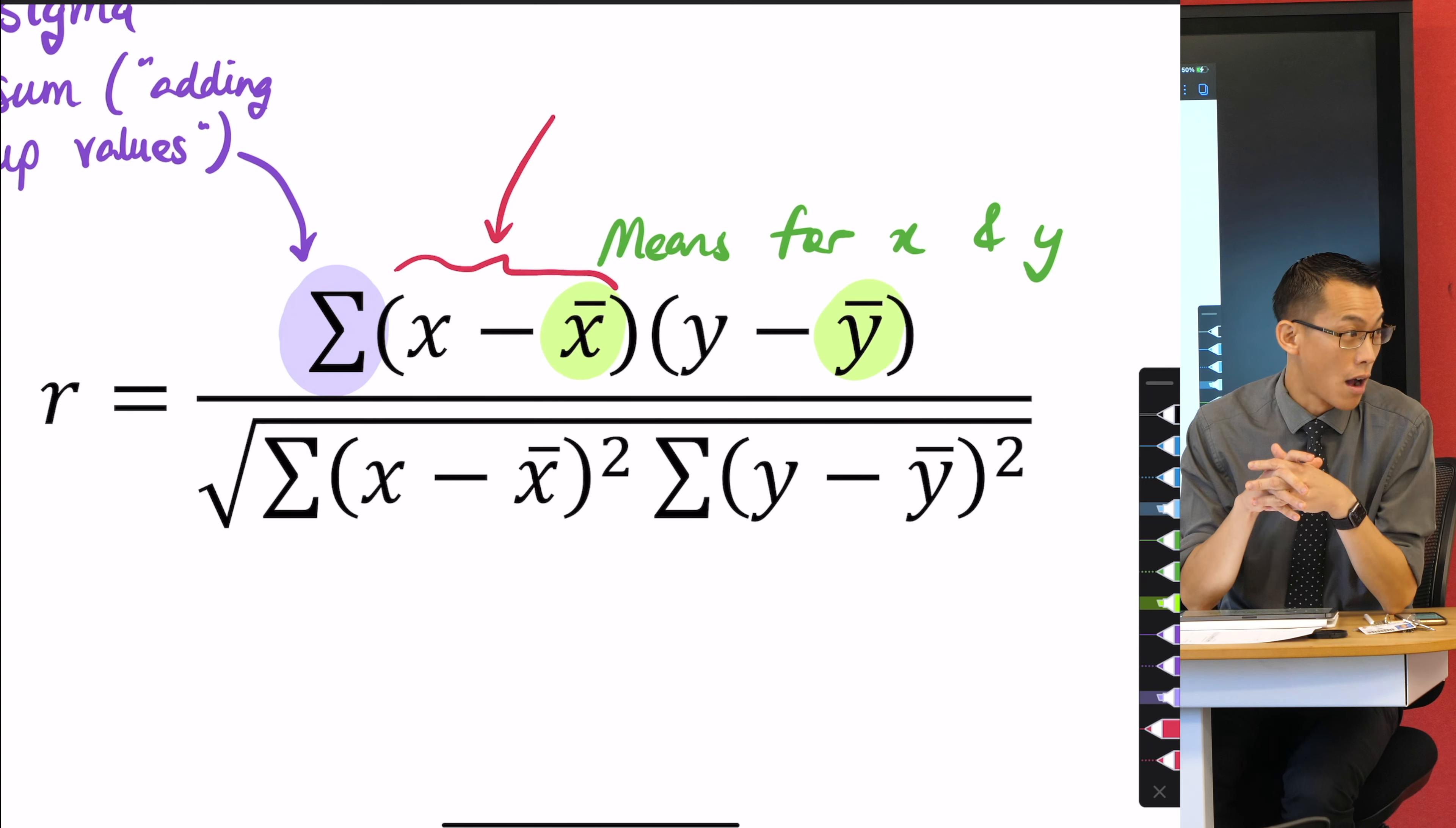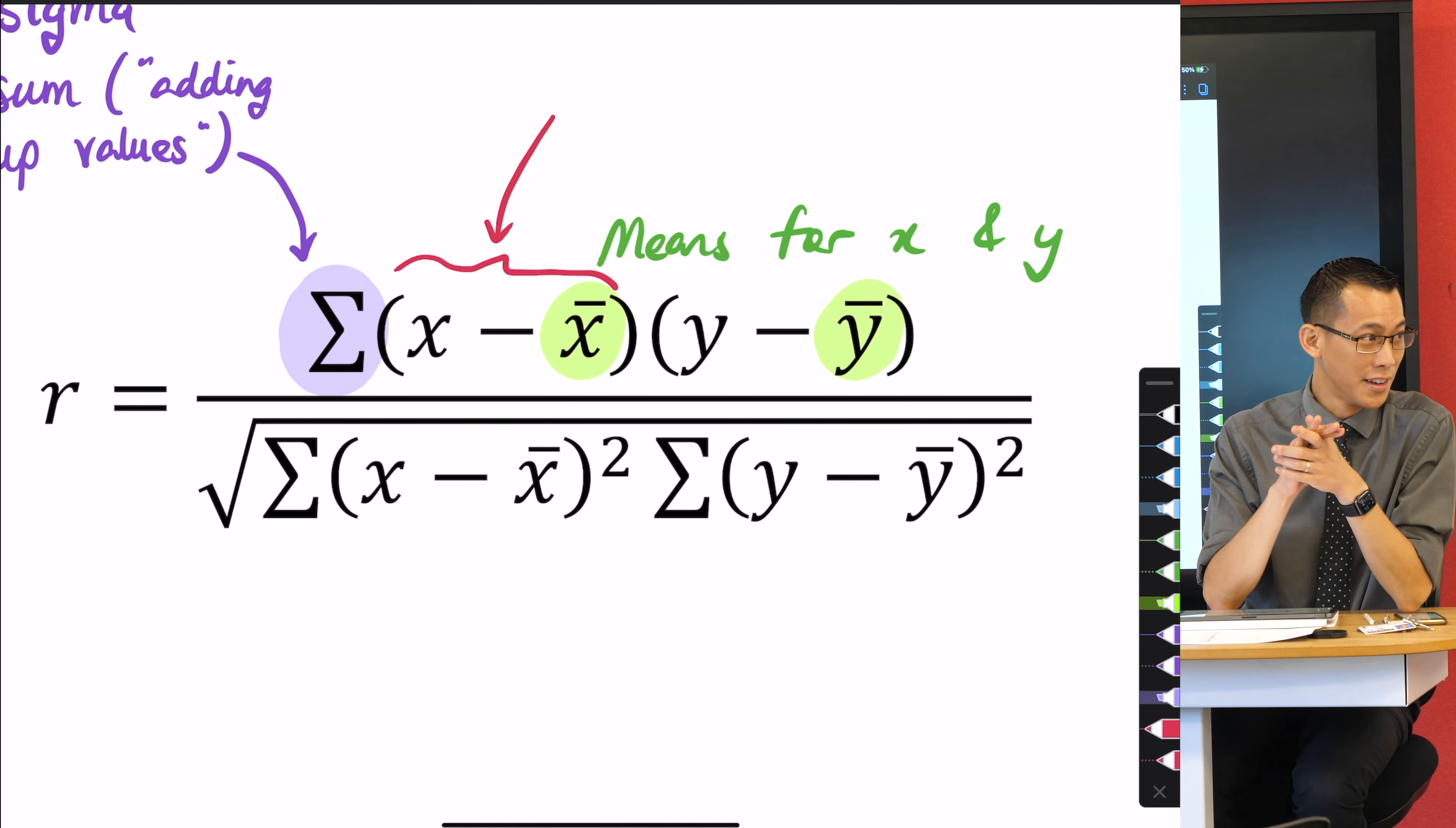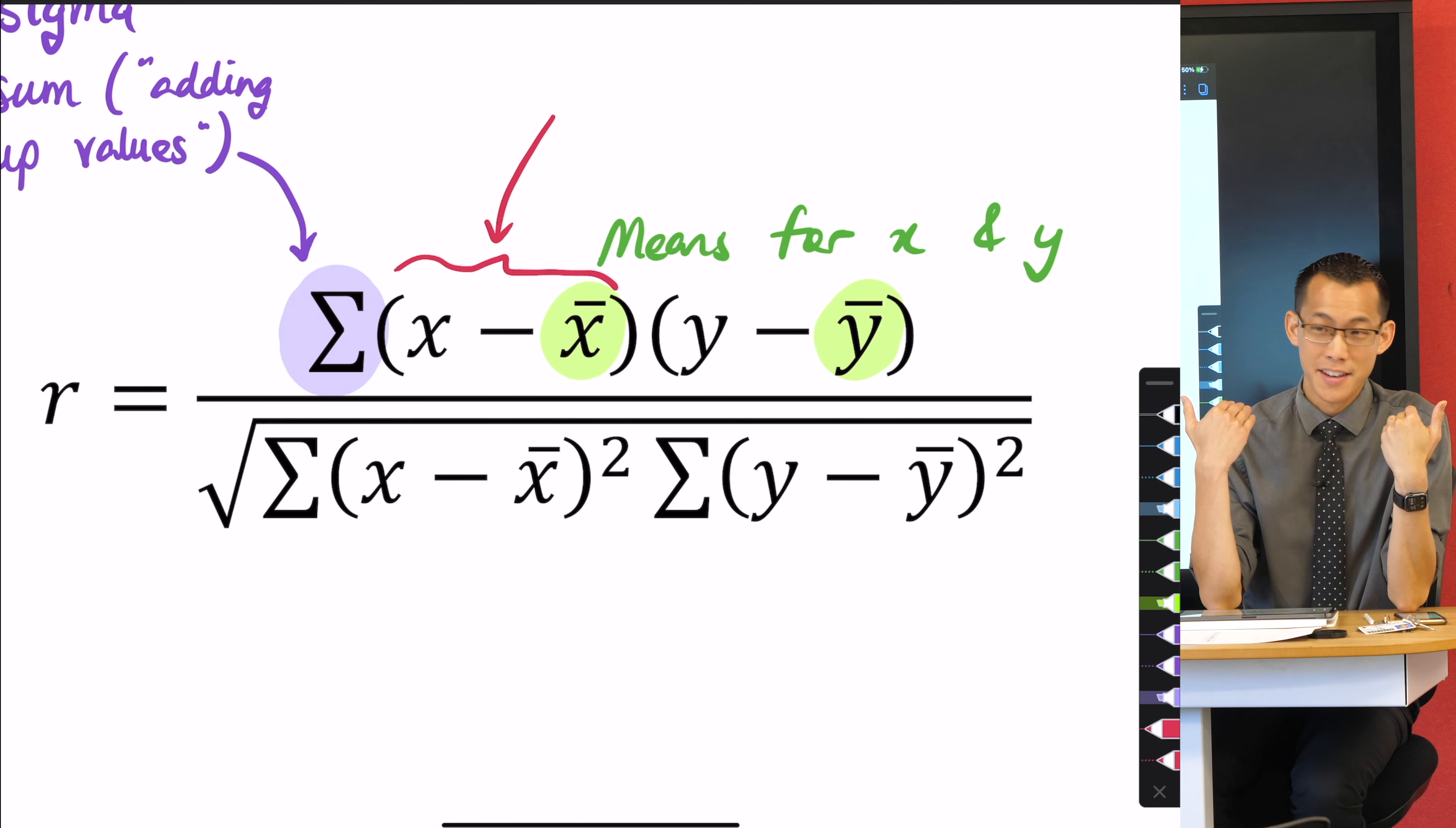I'm guessing the mean height for this class is somewhere around 170 centimeters, just my guess, because I've stood roughly next to you and I'm 178. I know some of you are taller than me, some of you are shorter than me. There's more people shorter than me here in this class, not by a lot, but outliers sometimes.